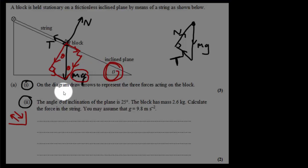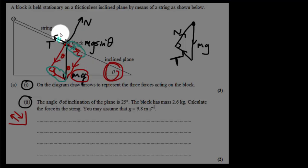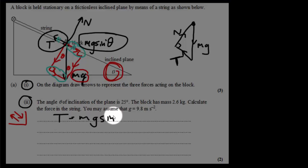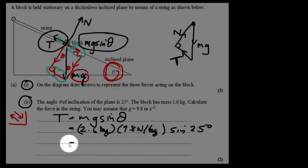If the object is in equilibrium, all forces cancel. The tension must be exactly equal to the component of weight along the ramp. That component is opposite angle theta, so it equals the hypotenuse mg times sine of theta — mg sine theta. With no net force up and down the ramp, T equals mg sine theta. Plugging in: m equals 2.6 kg, g equals 9.8 N/kg, and sine of 25 degrees gives T equal to 10.8 newtons.